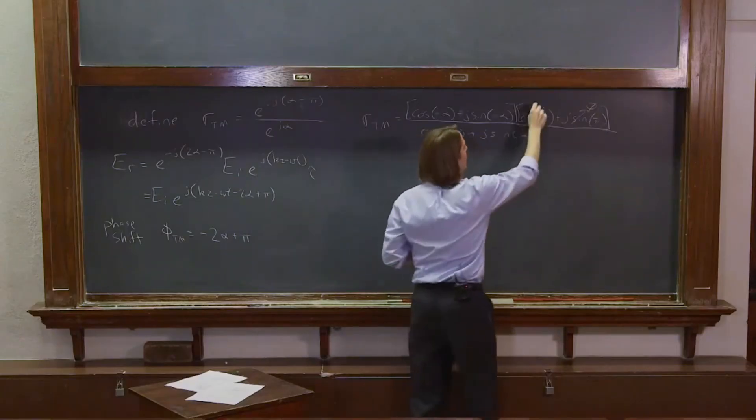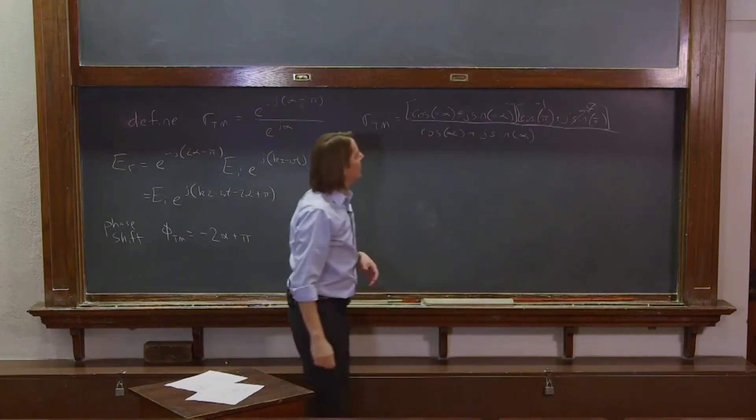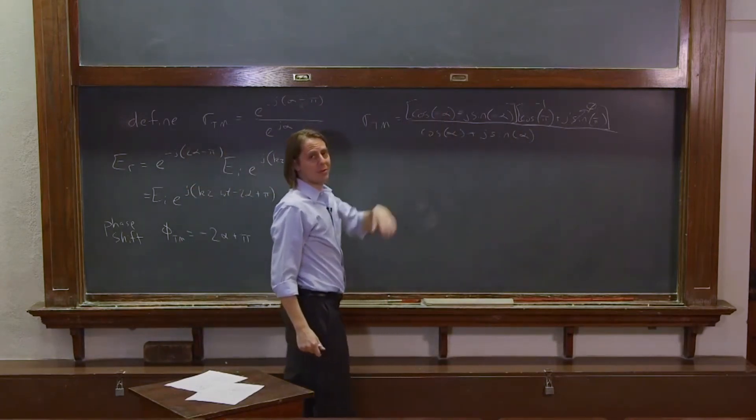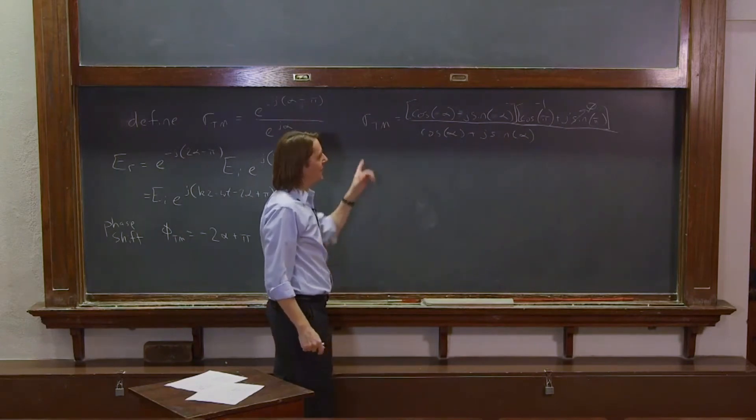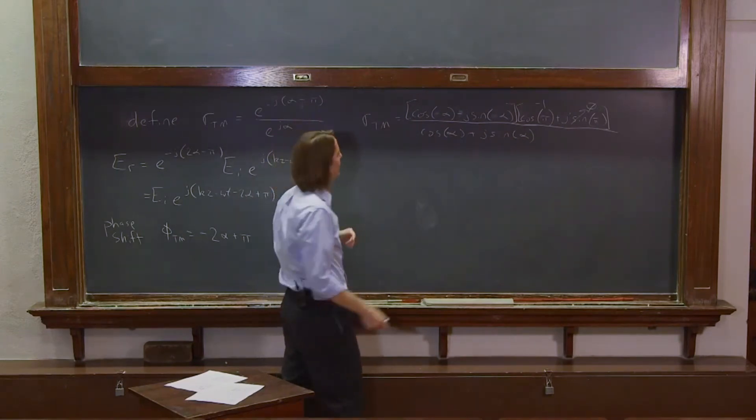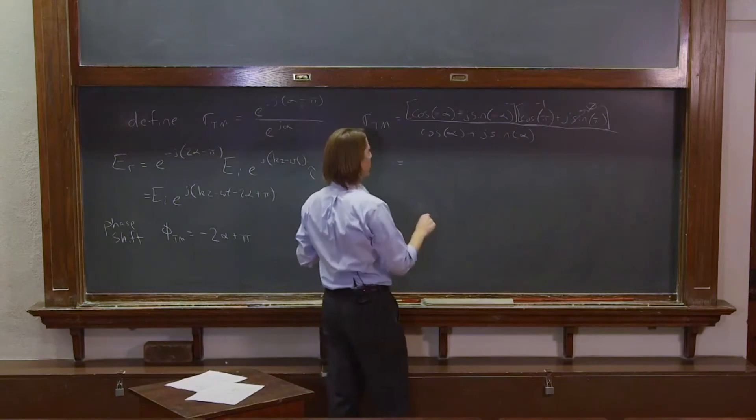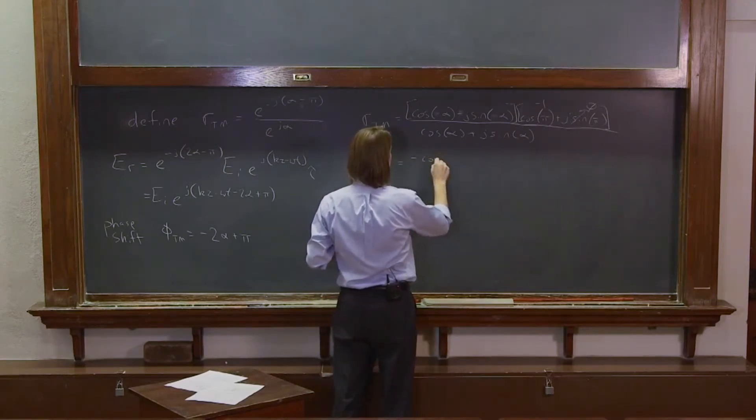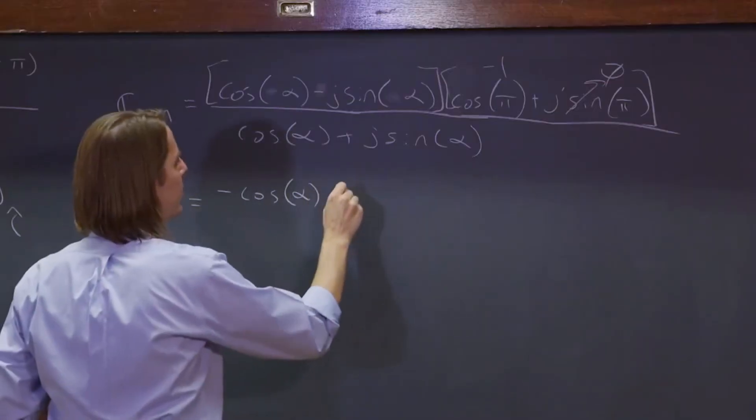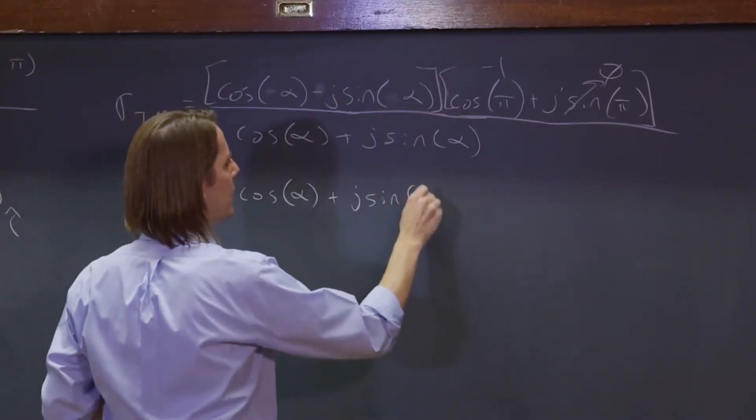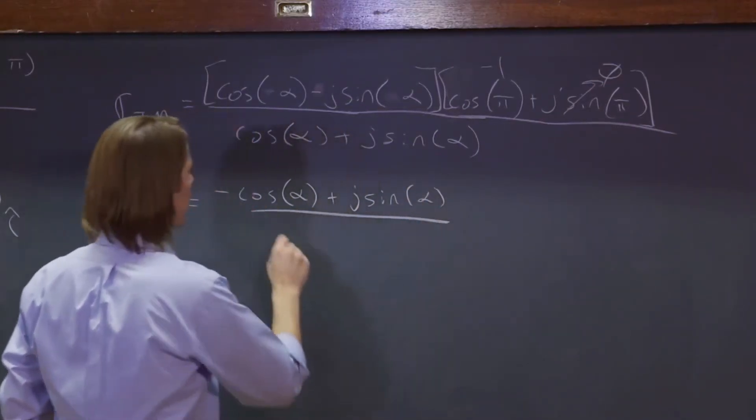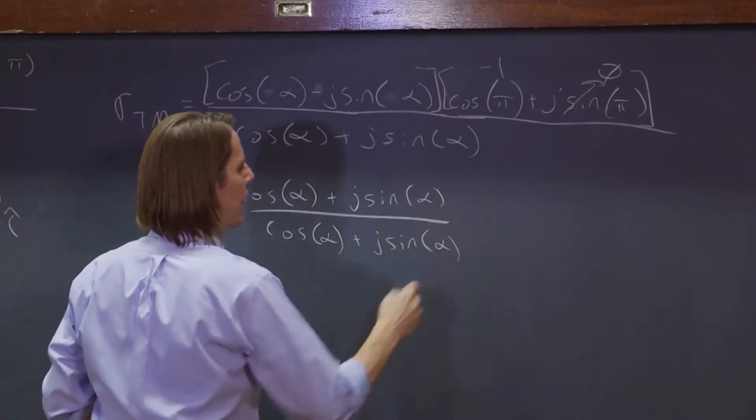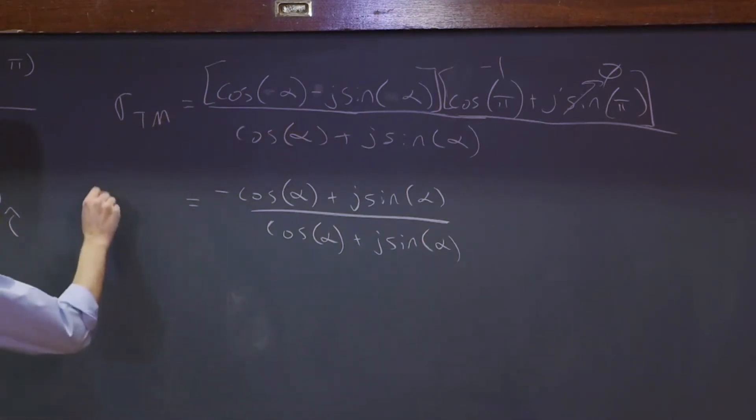This sine of pi is 0. Cosine of pi is minus 1, so this is just minus 1. So when I added that pi, it really just served to flip this around. I wanted to stick a negative 1 in the top. That's going to fix that negative 1 that runs around if you do it incorrectly. So this is going to be minus cosine alpha plus j sine alpha over cosine alpha plus j sine alpha. That's RTM.